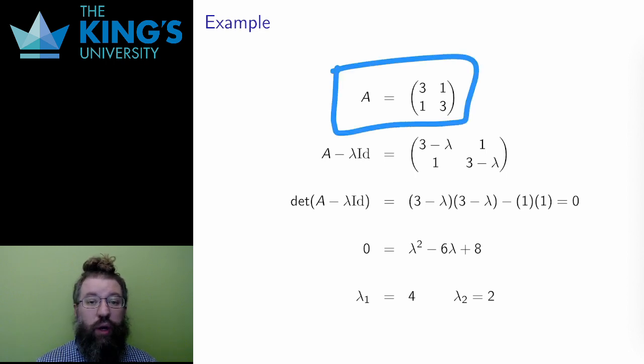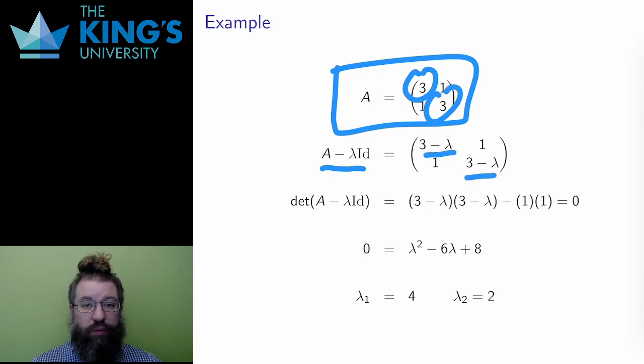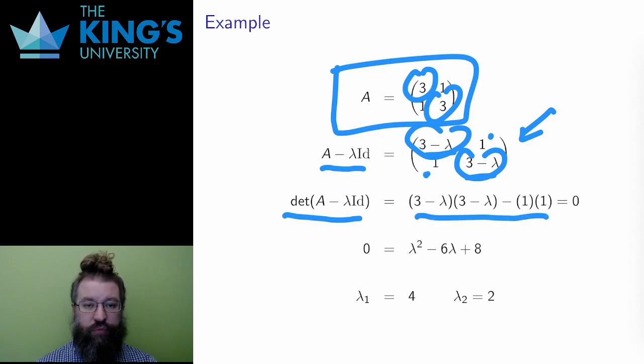Here is the first matrix, 3, 1, 1, 3. The algorithm starts with writing down A minus lambda identity. Minus lambda identity means subtracting lambda from all the diagonal places. So the matrix becomes 3 minus lambda, 1, 1, 3 minus lambda. Then I need the determinant of this matrix. This is just a 2 by 2 matrix. So the determinant is calculated by the AD minus BC pattern. In this case, 3 minus lambda times 3 minus lambda minus 1 times 1. If I expand the binomial and then group terms, I get the polynomial lambda squared minus 6 lambda plus 8.